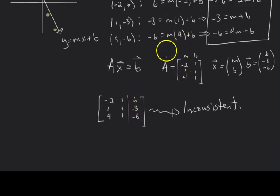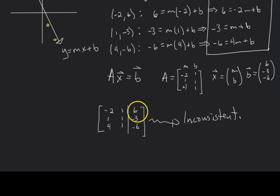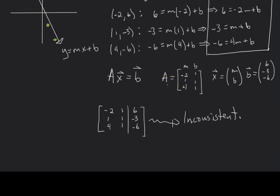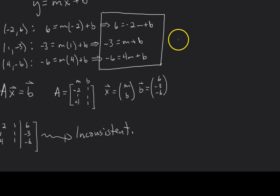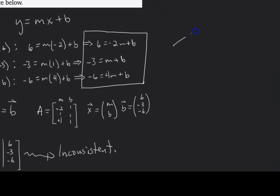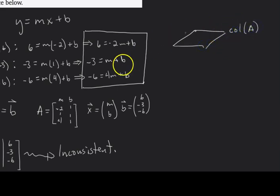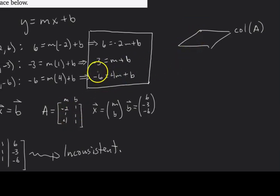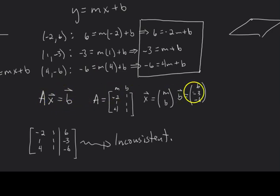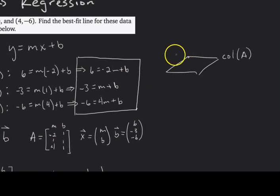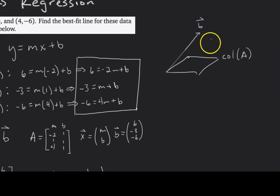Earlier in the class, if we got to this point and found a pivot in the augmented column, we'd just say it's inconsistent and move on. But now we can actually do something about it. Let's do a little aside. If we have this plane representing the column space of matrix A, and since Ax = b for this b vector is inconsistent, that means the vector b is not in the column space of A.